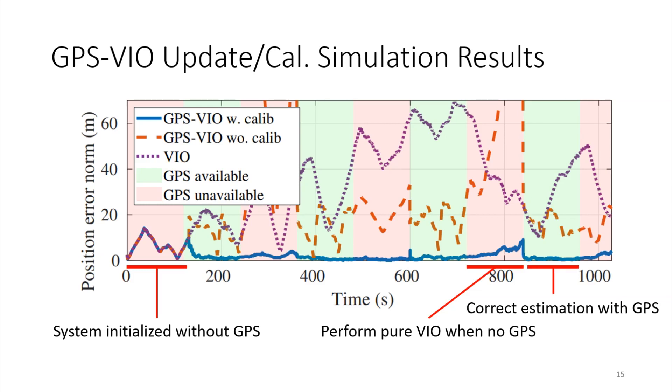On the other hand, GPS-VIO without calibration shows very inconsistent performance, even sometimes worse than pure VIO, proving that blind trust on erroneous calibration values can actually harm the system more.